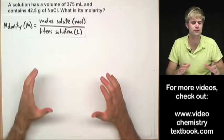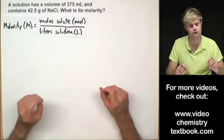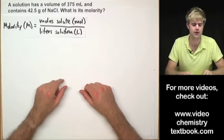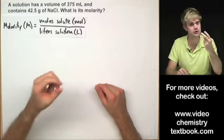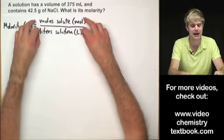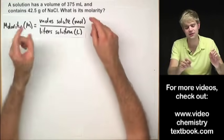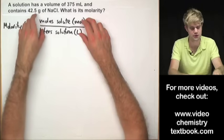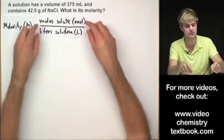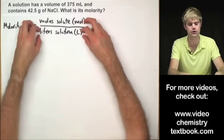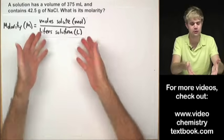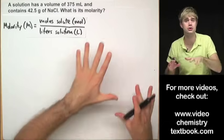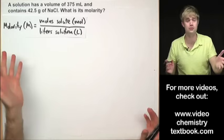A solution has a volume of 375 milliliters and contains 42.5 grams of NaCl (sodium chloride). What is its molarity? This is more challenging because we need moles of solute and liters of solution, but we're given neither directly. Instead of moles we have grams, and instead of liters we have milliliters — so we'll need to do both conversions before running the molarity equation.